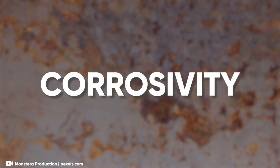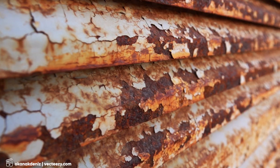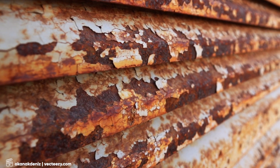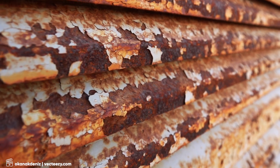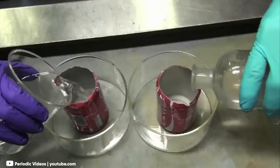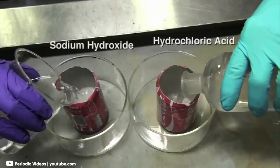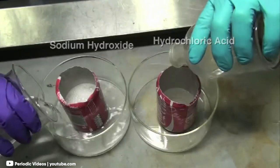Corrosivity is the ability of a substance to cause damage or wear away materials like metals, stone, or skin through a chemical reaction. A corrosive substance can eat away at or break down these materials over time. For example, acids like sulfuric acid are highly corrosive and can cause metal to rust or deteriorate quickly.